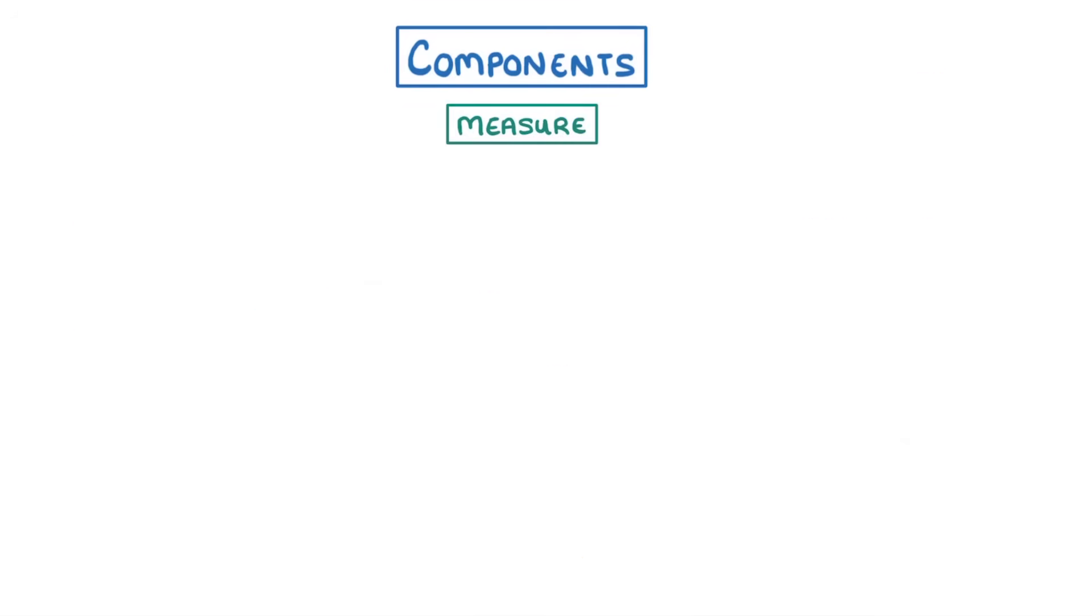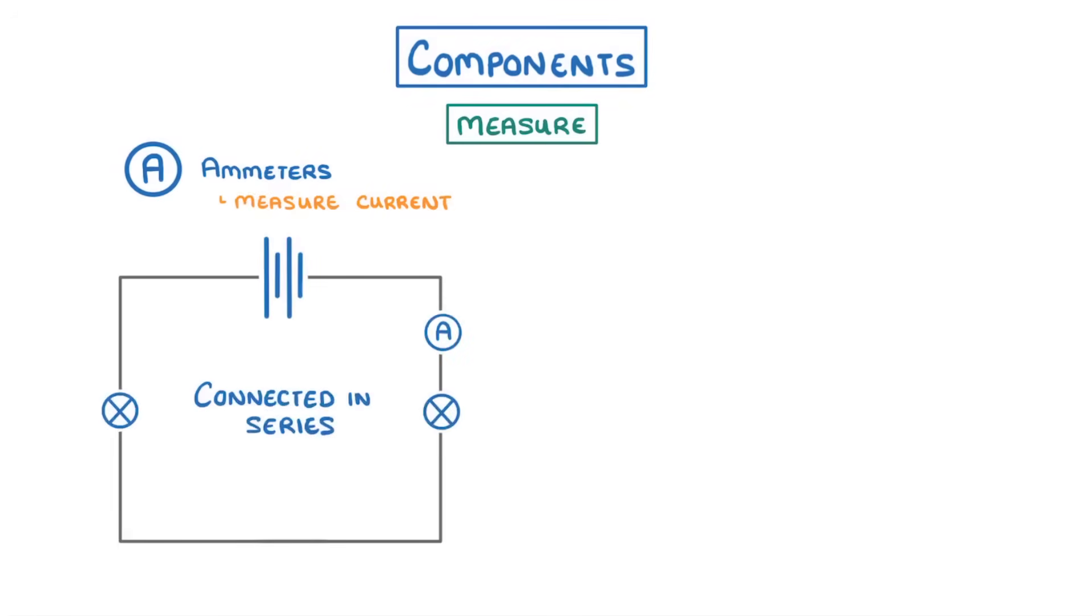To measure things in our circuit we have ammeters which measure current and are connected in series, and voltmeters which measure potential difference and added in parallel.